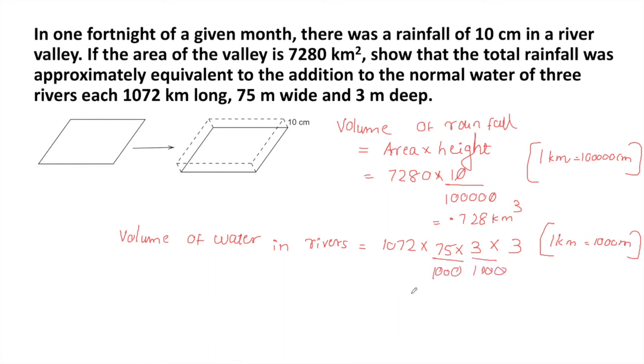After solving this, we'll get 0.726 cubic kilometers. So these values are approximately the same. We can conclude that volume of rainfall is equal to volume of water in three rivers.